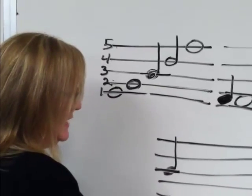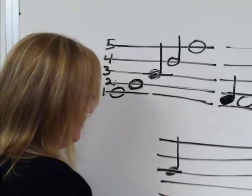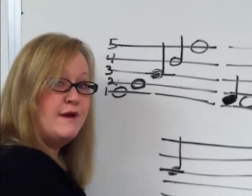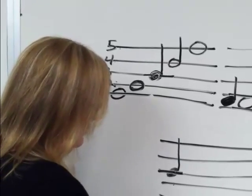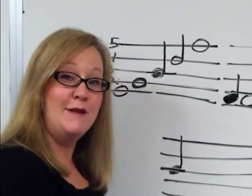So ask yourself if it's a line note or a space note. And because there is a line going through the center of the note, through the center of the oval, it is a line note. And then we count the lines, line one, line two, line three. So the answer to this would be L3 or you can write out line three. Either one would be correct.